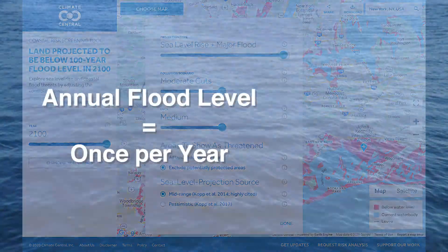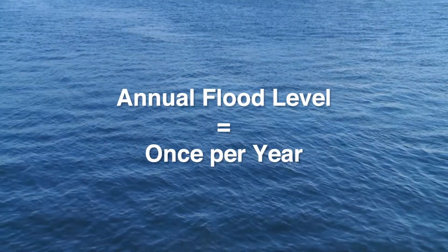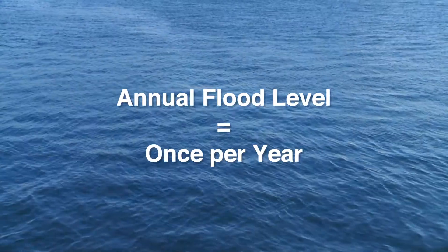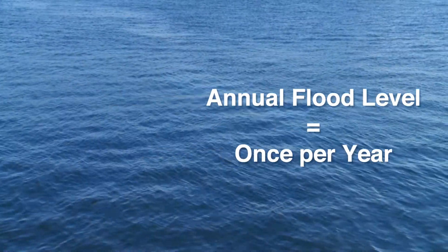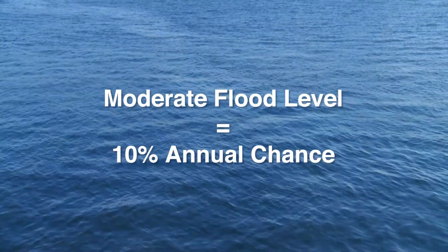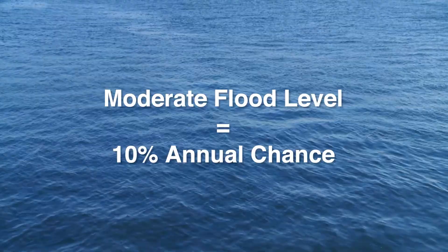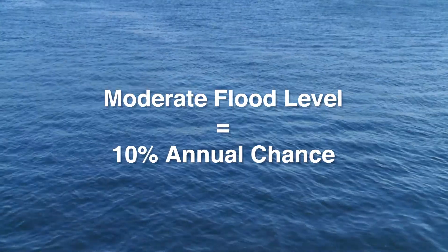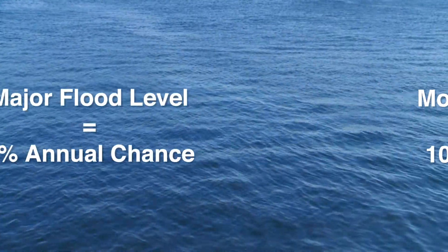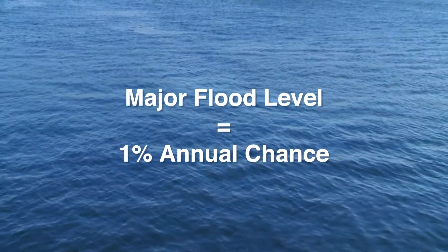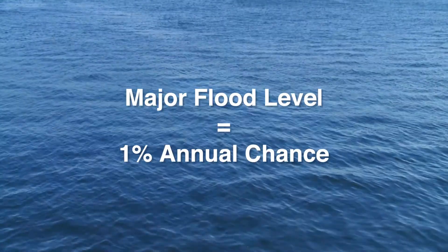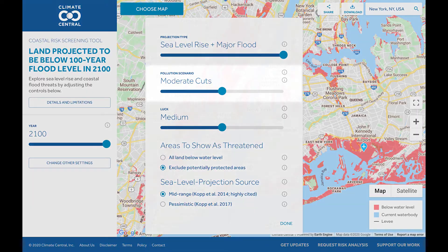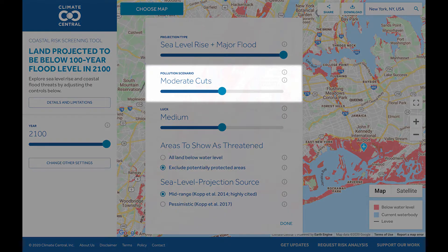An annual flood level, like the name suggests, is a flood level expected to occur once a year. A moderate flood is higher than an annual flood and has a 10% chance of happening in a given year. A major flood is even higher and has a 1% annual chance.